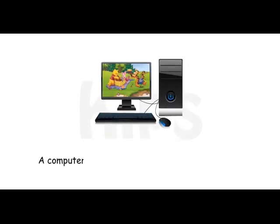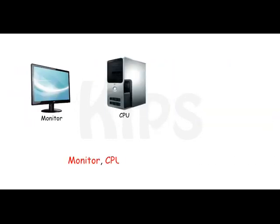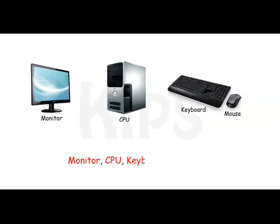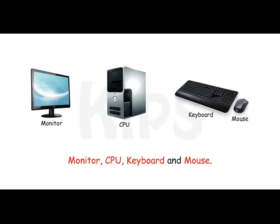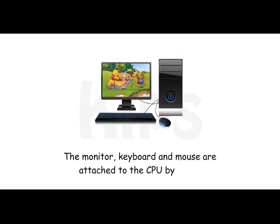A computer is a machine that has four main parts: Monitor, CPU, Keyboard and Mouse. The monitor, keyboard and mouse are attached to the CPU by wires.